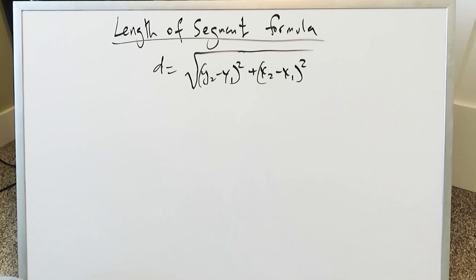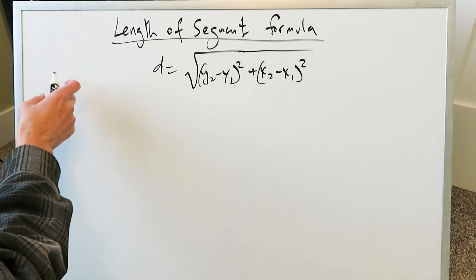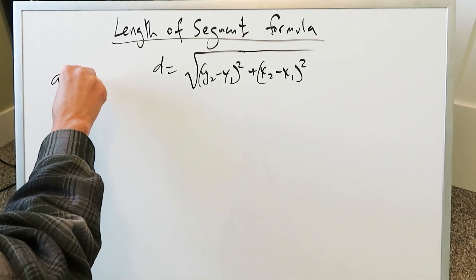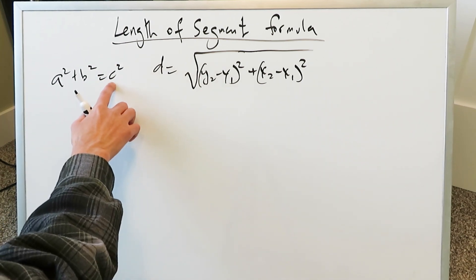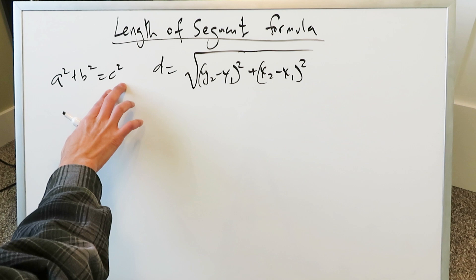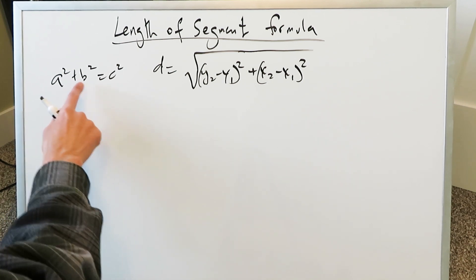If you think about it in terms of derivation, it all comes from the Pythagorean theorem formula a squared plus b squared equals c squared. That's all what you're looking at, where c here represents the distance between your two points and these are the components that are feeding in.